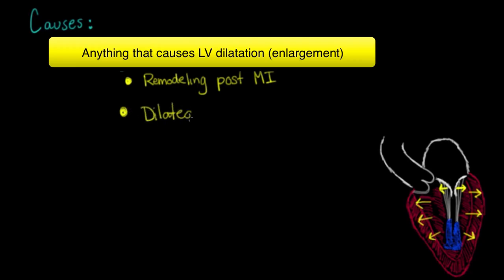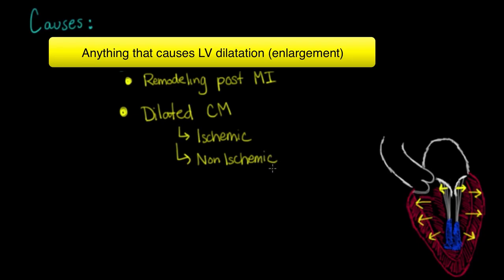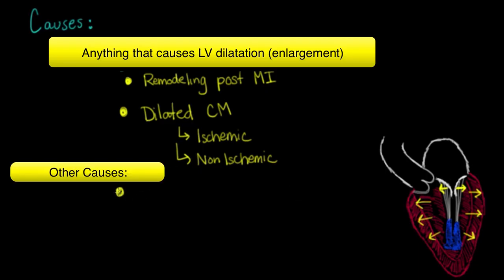Another cause is dilated cardiomyopathy — an inherent disease of the heart muscle that can cause the heart to become dilated. This can be broken down into ischemic and non-ischemic causes: coronary artery disease over time can cause the heart to dilate, but it can also be a genetically acquired disease or result from alcohol or toxins. Another cause of mitral regurgitation is rheumatic fever or rheumatic heart disease. Mitral regurgitation is actually the early lesion of rheumatic fever.